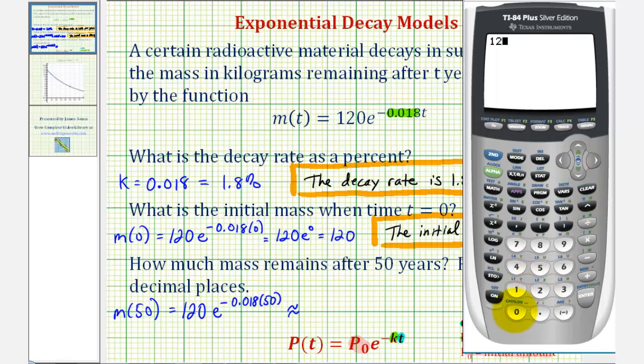We have 120. Now here if we press second ln, it brings up e raised to the power of, and then we have negative 0.018 times 50, close parenthesis, and enter.